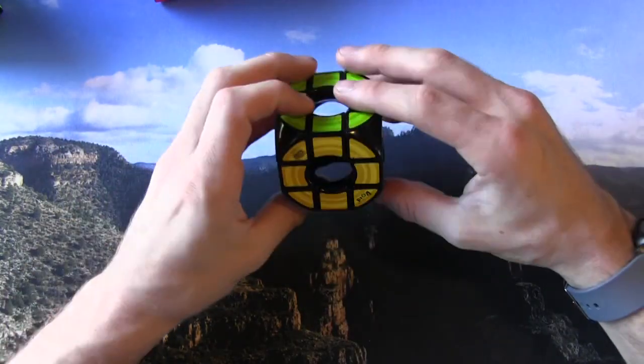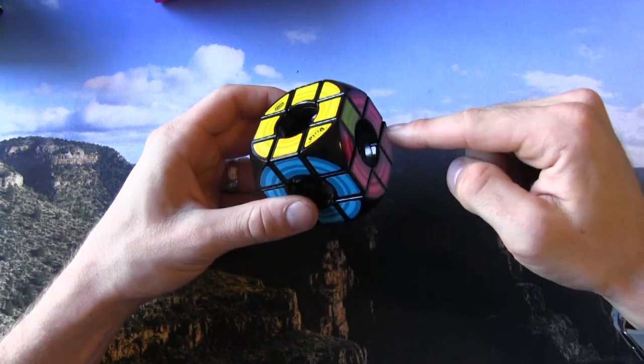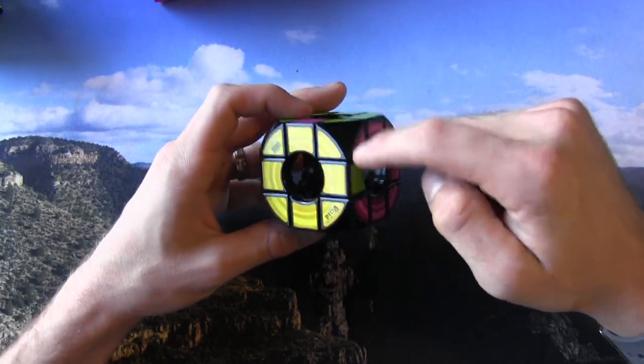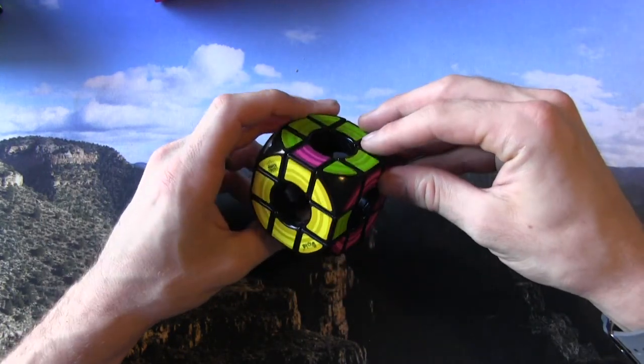where you get to the very end, and instead of it all being solved like this, it is like this, where everything's solved except for two pieces. And this would be called an odd parity, which is not possible on a normal 3x3.